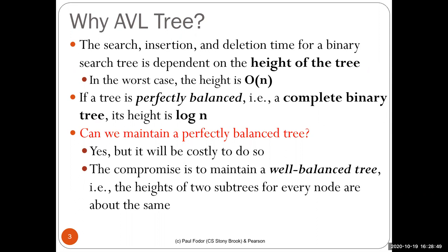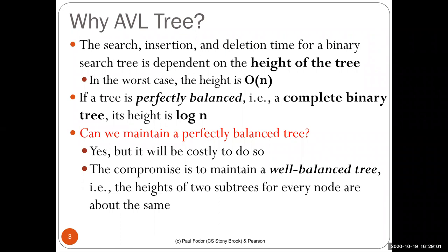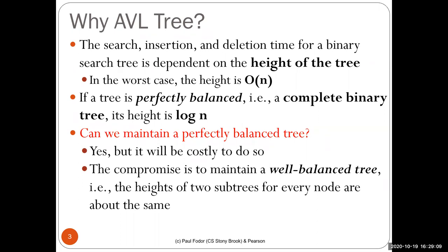If the tree is perfectly balanced, you have a complete binary tree and the height is guaranteed to be log(n). But keeping a perfectly balanced tree is extremely costly — essentially O(n). So the compromise is to maintain a well-balanced tree, where the heights of the two subtrees of every node are about the same: plus or minus one or zero.